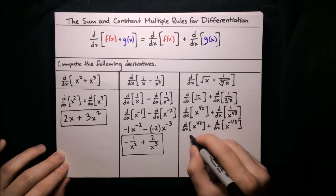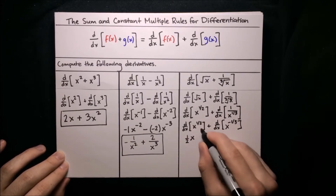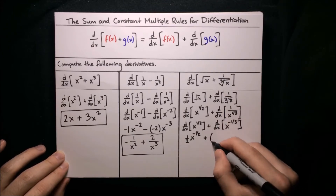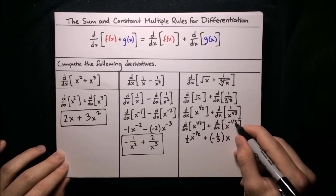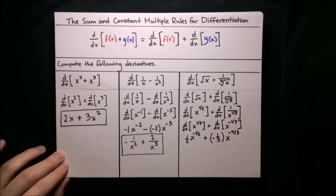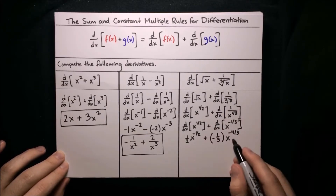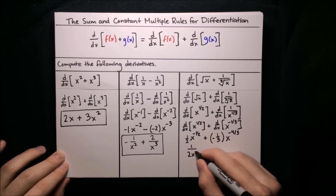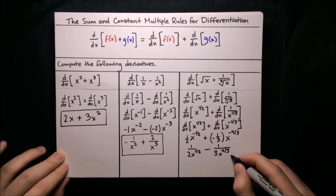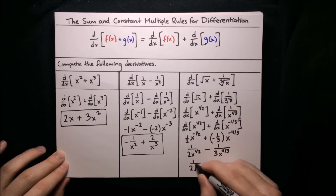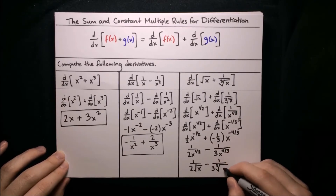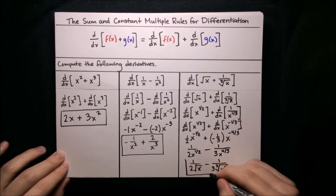Now applying the power rule: bring down 1 half, times x, decrease the exponent — 1 half minus 1 gives negative 1 half. Then plus: bring down negative 1 third times x, decrease that exponent — negative 1 third minus 1 is negative 4 thirds. Simplifying: x to the negative 1 half gives 1 over 2x to the 1 half, and then minus 1 over 3x to the 4 thirds. Writing in root form: 1 over 2 root x, minus 1 over 3 times the cube root of x to the 4th. There is our derivative.